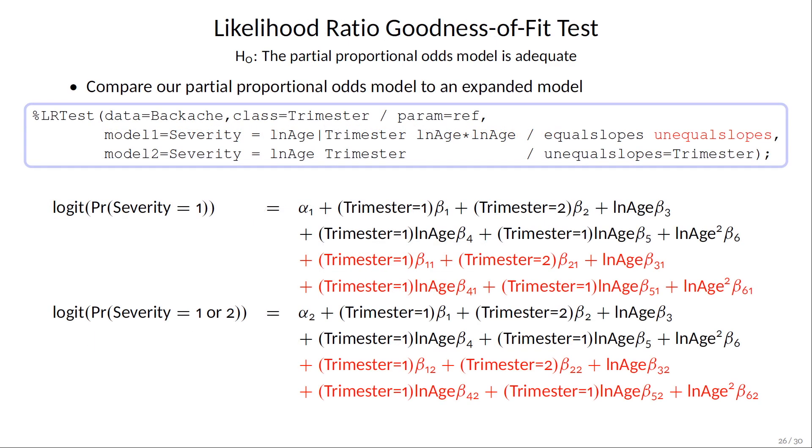Finally, for goodness of fit testing, you want the expanded model to include interactions and squared terms, and we'll beef it up even more by specifying both equal slopes and unequal slopes.